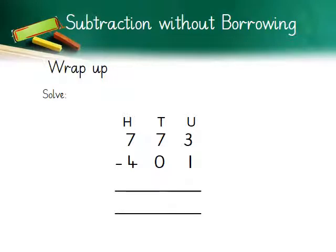Moving to the wrap-up session: solve the given sum 773 minus 401. You can do it easily — you've had a lot of practice. Take care of place value. The answer is 372. I hope your answer is the same — good job! Children, complete your work neatly and carefully in your notebooks and textbook. Take good care of yourself.